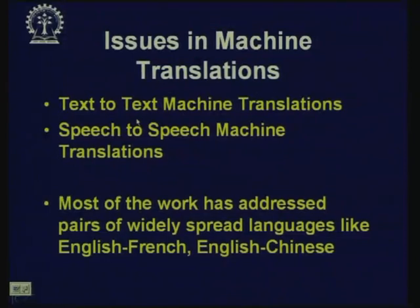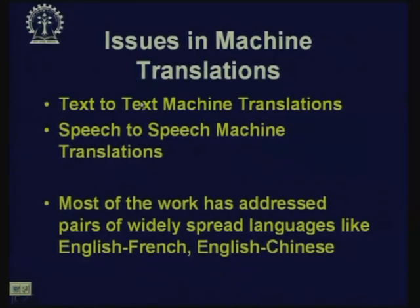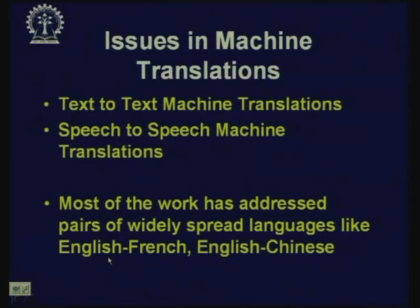Machine translation can be text-to-text, for example translating a Hindi text to Bengali, or it can be speech to speech — converting speech to text, then performing machine translation at the text level, and converting back to speech. Most of the work done has addressed pairs of widely spread languages like English-French, English-Chinese, English-German, English-Hindi, and English-Bengali. Works are also being carried out for Hindi to English and Hindi to Bengali, and the Government of India has taken a lot of initiative in these activities.